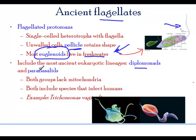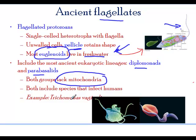These are just names — you don't have to remember them, but just know that you were exposed to them. These groups lack mitochondria and include species that infect humans. For example, trichomonas is one example of a flagellate.